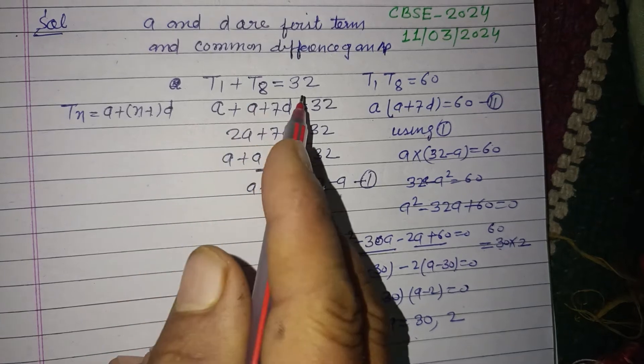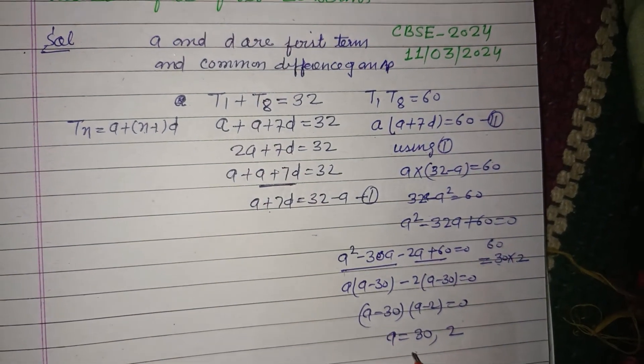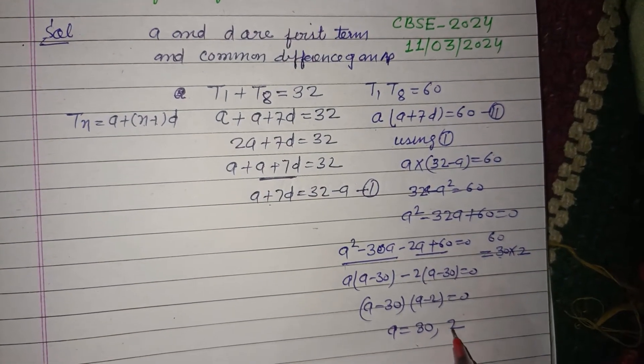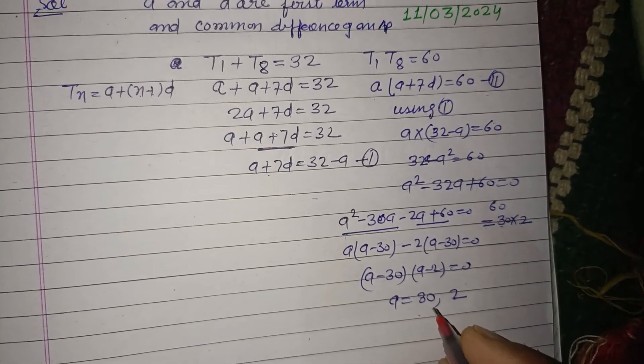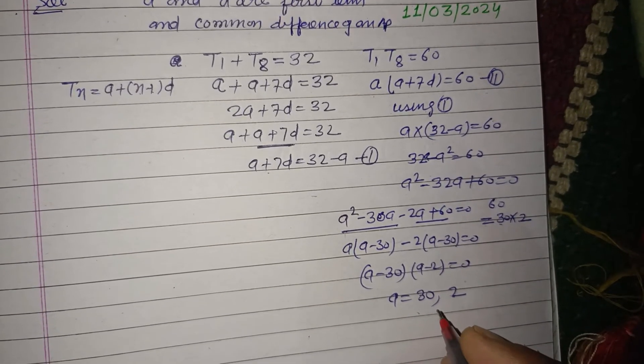So students, as the first and eighth term sum is 32, we take a is 2, not 30.